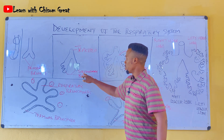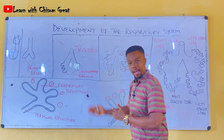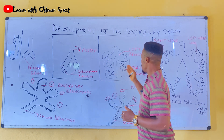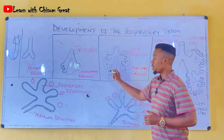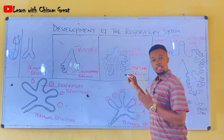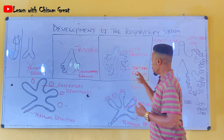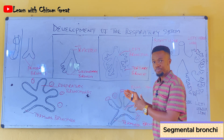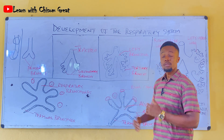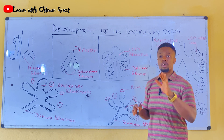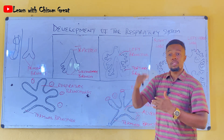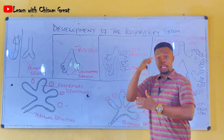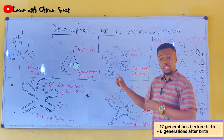As this is happening, the secondary bronchi further divides — it keeps growing and divides into tertiary bronchi. Both the right and left secondary bronchi keep dividing to form the tertiary bronchi, which can also be called segmental bronchi. The tertiary bronchi continually divides and, before birth, will have divided about 17 times, giving rise to about 17 generations of tertiary bronchi.